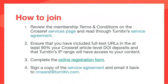So here are some of the steps on how to join. If you're a Crossref member and you're assigning article-level DOIs, then you're eligible to join. You'll review the terms and conditions on the Crossref services page and read through Turnitin's service agreement. You ensure that you have included full text URLs in at least 90% of your DOI deposits and that Turnitin's IP range will have access to your content. You then complete the online registration form, sign a copy of the service agreement, and email it back to Crossref. If you need more information on Turnitin's IP range or how to include full text URLs in your DOI metadata, you can refer to our get started guide on the website. Full technical instructions are also available on our help site.